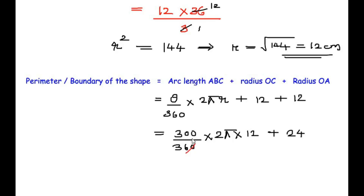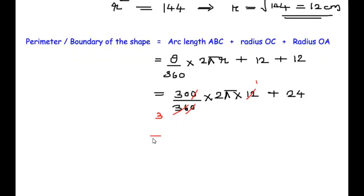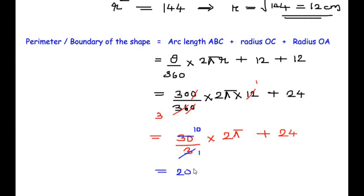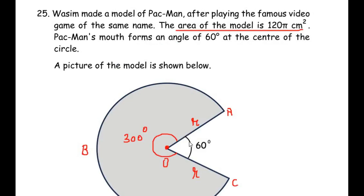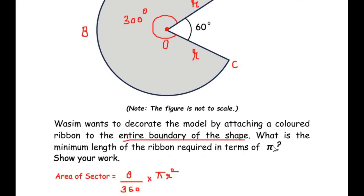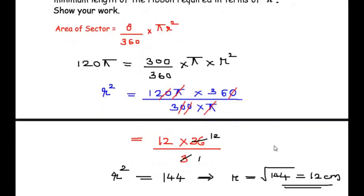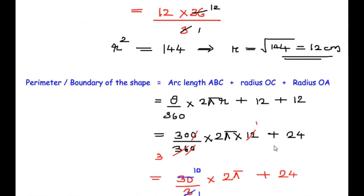Simplifying: cancel a zero from 300 and 360 to get 30 over 36, then 12 cancels with 36 to give 30 over 3 times 2pi = 10 times 2pi = 20pi. Adding the two radii: 12 + 12 = 24. So the total perimeter is 20pi + 24 centimeters. This is the minimum length of ribbon Wasim needs. I hope you understood all the steps — like, share, and subscribe to my channel.